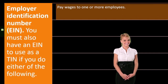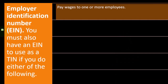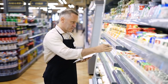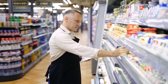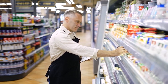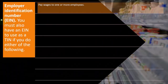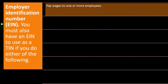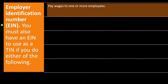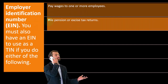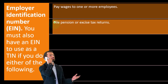It's usually fairly easy to get an EIN — it's not a difficult process. With businesses, it's fairly easy to set them up; it's actually more difficult to close them, so just be aware of that. You must have an EIN to use as a TIN if you pay wages to one or more employees. You have to have an employer identification number to process the payroll returns.